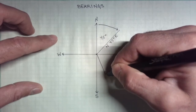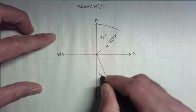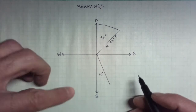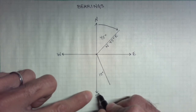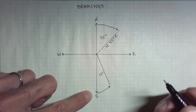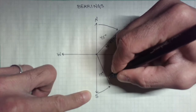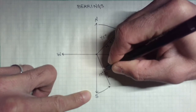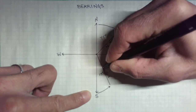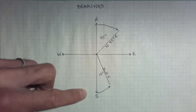In the southeast quadrant, let's say we have a 15 degree angle here. Bearings in the southeast quadrant are always recorded from the south towards the east. So in this case, the bearing of this line would be south 15 degrees east, and again, maybe some minutes and seconds on there.